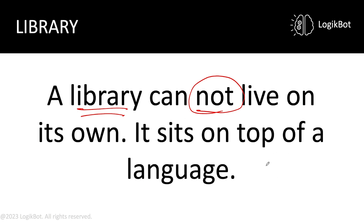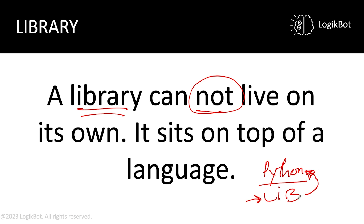A library sits on top of the language. Most libraries we work with in the real world use Python, and it must be used in conjunction with Python. The keyword you'll see is 'import.' We import parts of these libraries, which is pre-bundled code that gets imported into Python so we can access the functionality of that library. The same applies with R, but we're going to focus on Python.